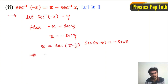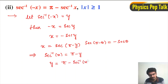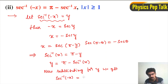This can be written as sec⁻¹(x) = π - y. Now shifting sec⁻¹(x) to the right-hand side and -y to the left-hand side, we get y = π - sec⁻¹(x). Substituting for y, we get sec⁻¹(-x) = π - sec⁻¹(x). This is the required result.